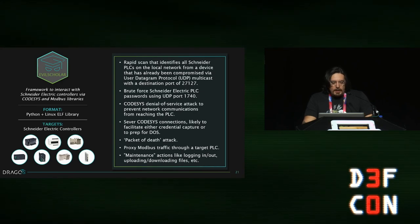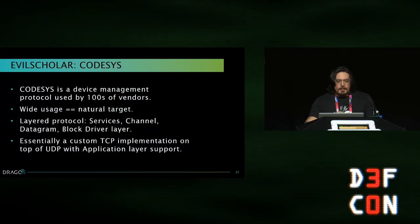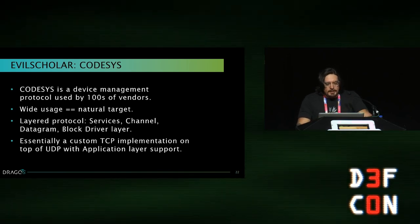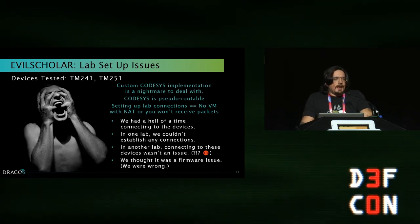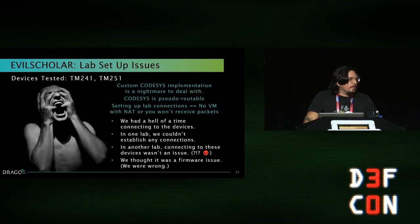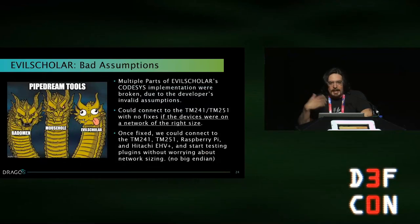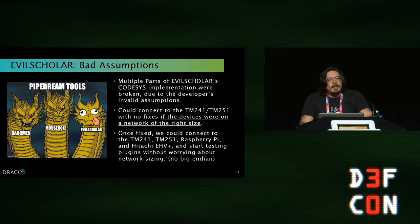Moving on to Evil Scholar, the CODASYS version 3 utility. The main things we'll focus on are the proxy module and the maintenance commands that allow file transfer and logic modification. CODASYS is a device management protocol used by hundreds of vendors — wide usage makes it a natural target. It's essentially a custom TCP implementation on top of UDP with an application layer, which basically means CODASYS is a pain in the ass. It's pseudo-routable, and with NAT you don't get packets back. This made it hard to tell whether you're dealing with broken malware or a broken network config.